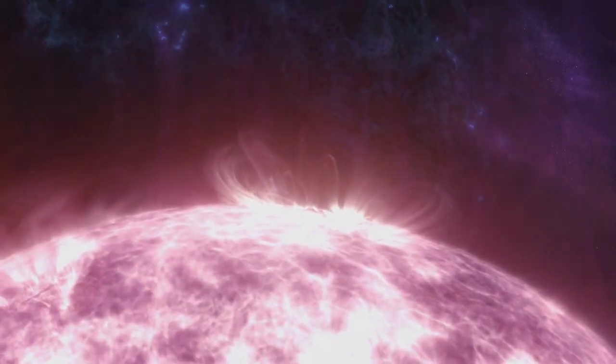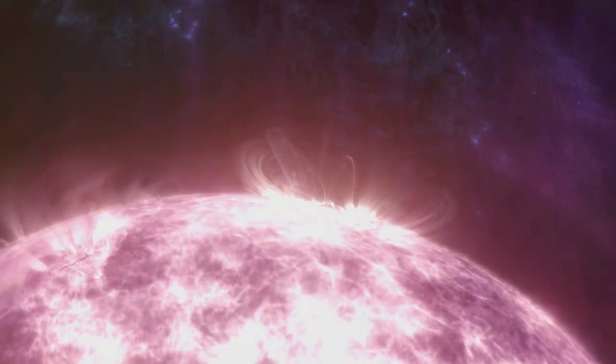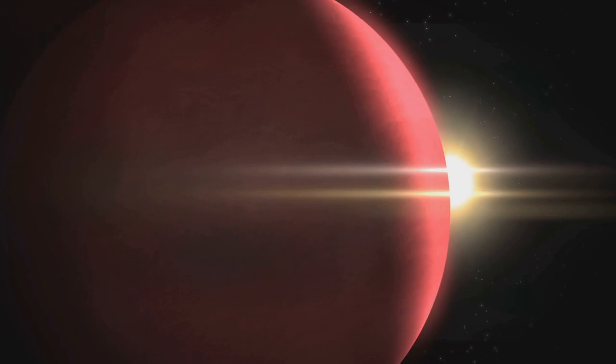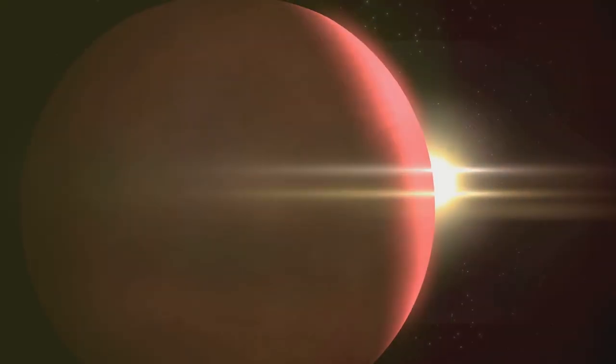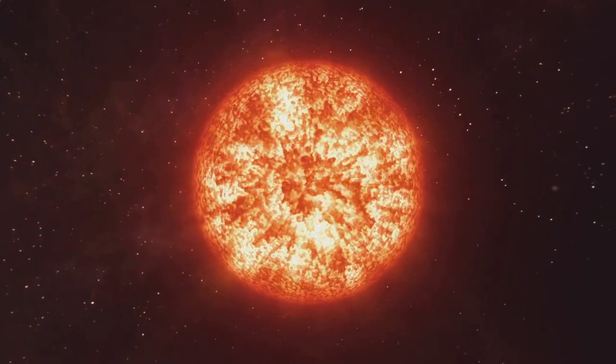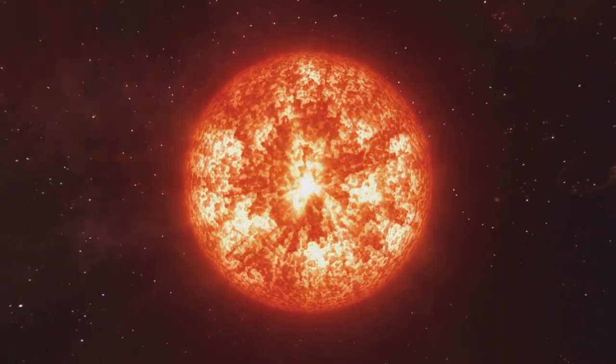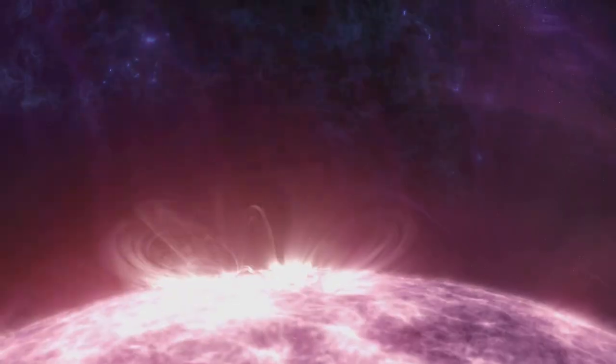As its hydrogen fuel dwindles, it embarks on a path of transformation that can lead to a variety of fascinating outcomes. Imagine a star, similar in size to our very own sun. As it exhausts its hydrogen, it expands into a red giant. Its outer layers swell, engulfing nearby planets and casting a beautiful reddish hue across its surface.